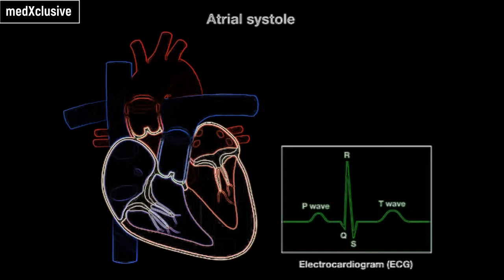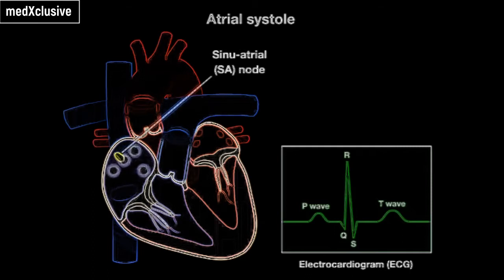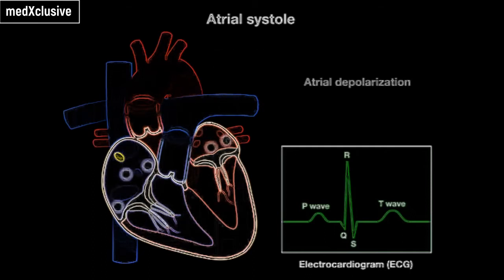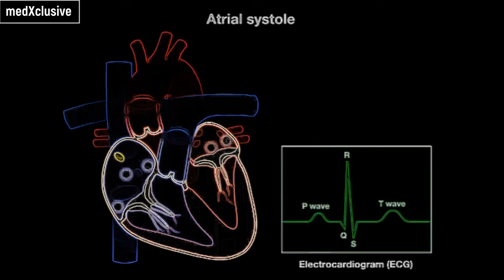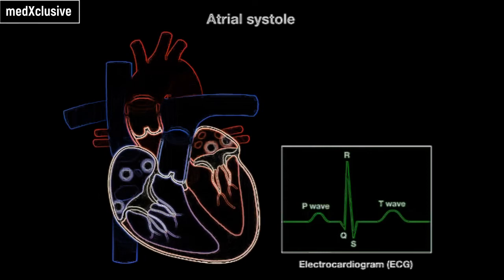Ventricular filling is completed by atrial systole, or contraction. This contraction results from a series of events beginning with the spread of action potentials from the sinuatrial, or SA, node across the walls of the atria. This results in atrial depolarization, which is represented by the P wave on the electrocardiogram, also called an ECG or EKG. Atrial depolarization initiates contraction, or systole. Atrial systole is represented by the PQ segment on the ECG.